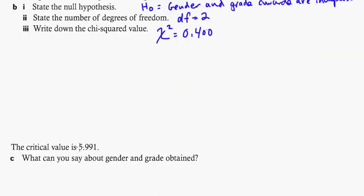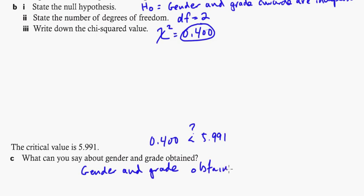Now, let's see what else to ask. The critical value is 5.991. What can you say about this? Now, this value we get right here is really important. If this is less than this, we accept the null hypothesis. So we go 0.400, is that less than 5.991? And it is, yes. So what we would say here, what can you say about gender and grade obtained? Well, gender and grade obtained are independent.